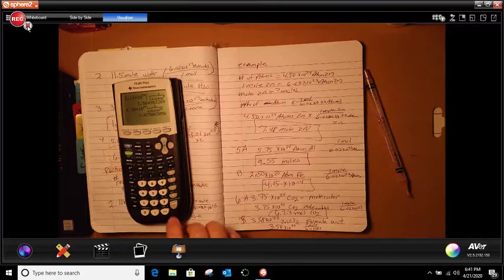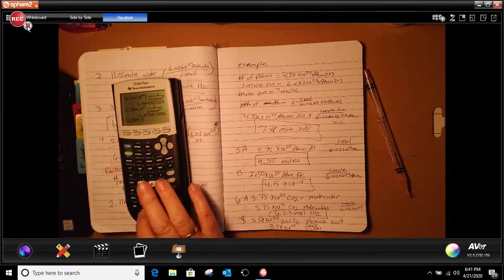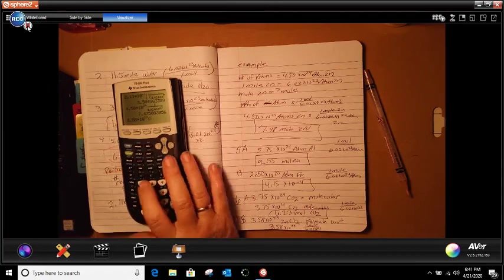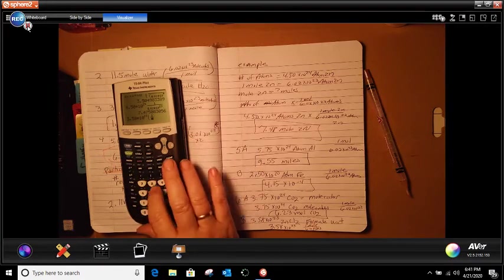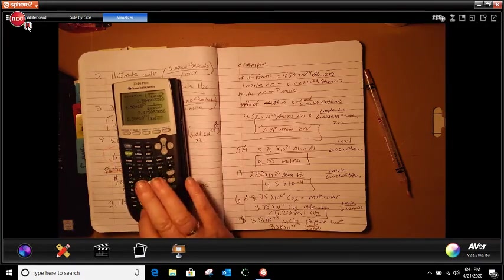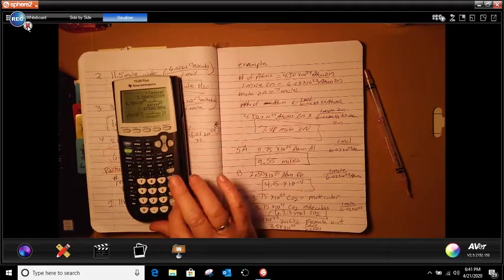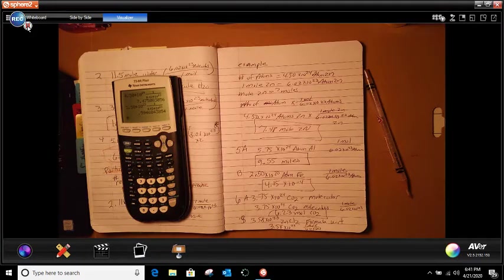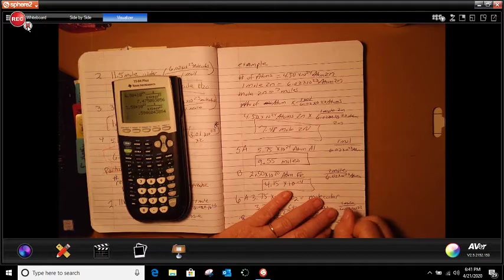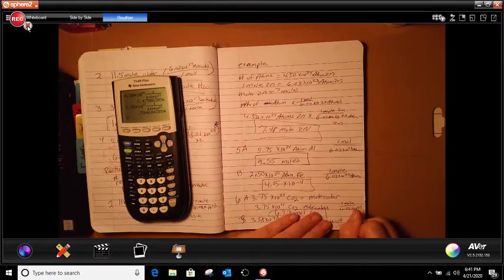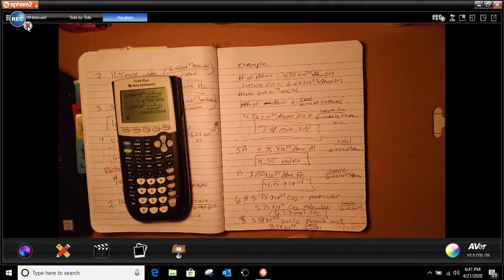So it should be 6.23 moles of CO2. This is a formula unit. And that is going to be 3.58 times 10 carat 23 open bracket alpha Y enter. That would be 1 over 6.02 times 10 carat 23 over close bracket. And I got 0.59. So I would say 0.59. And this is going to be moles of ZnCl2. And that is my answer.